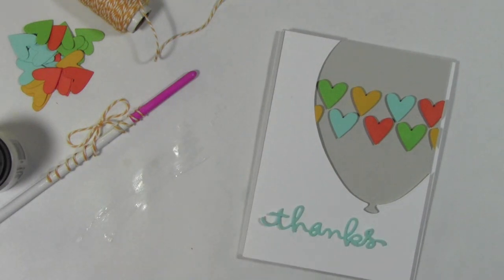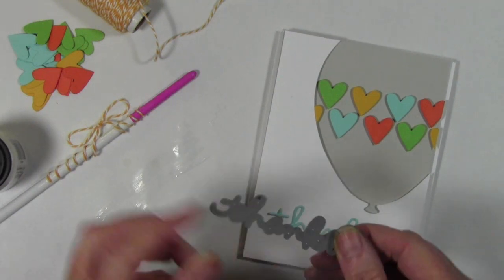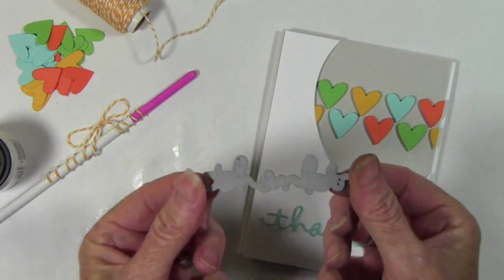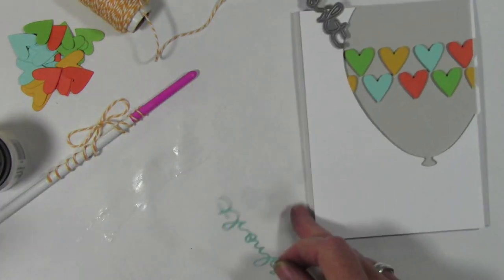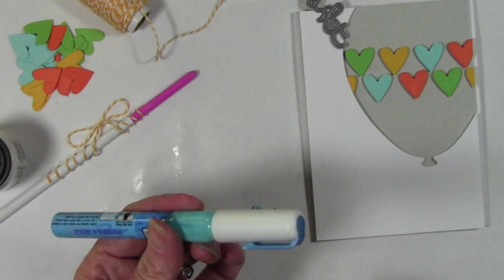While my bow is drying, I'm going to add my greeting and this is the Simon Says Stamp Thanks and it's in Christina Werner's handwriting, I absolutely love it, and I've cut that out from sea glass paper.